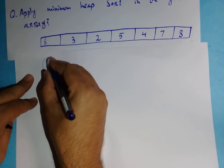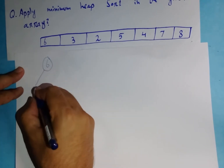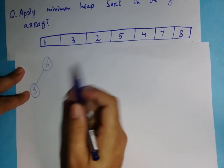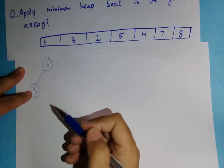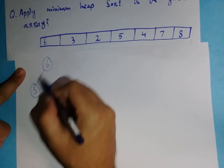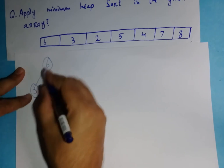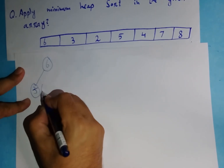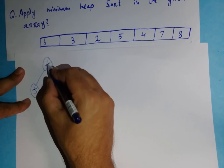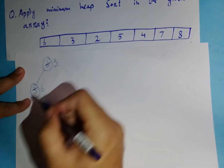Going back to the array, after 6 the value 3 comes up. I write down 3 and check the condition. In minimum heap sort the value of the child node should be greater than the parent node. Here 3 is smaller than 6 — 3 is the child node and 6 is the parent node — so the condition is false. I swap the values: 6 moves down and 3 moves up.